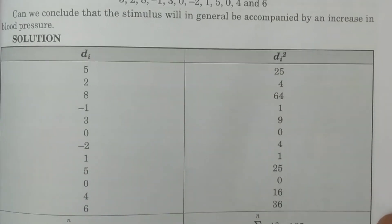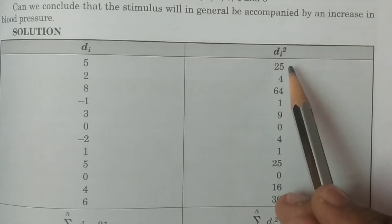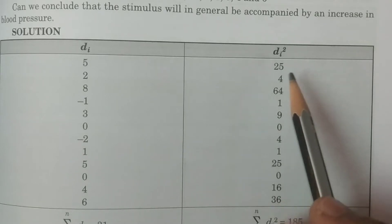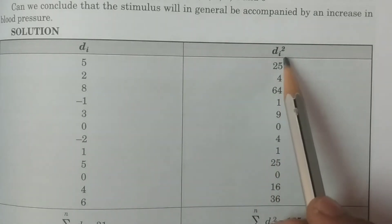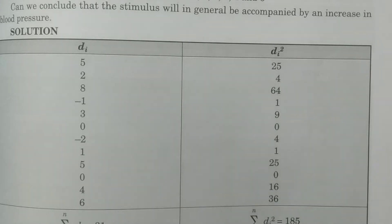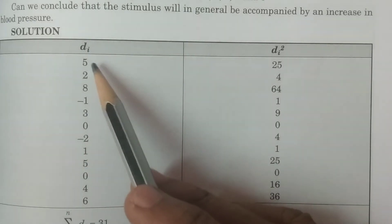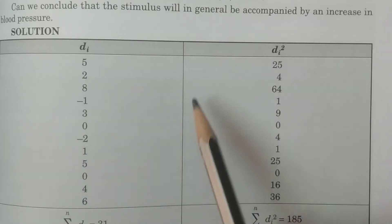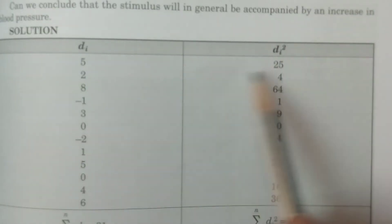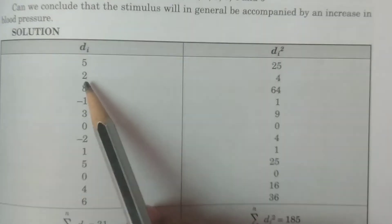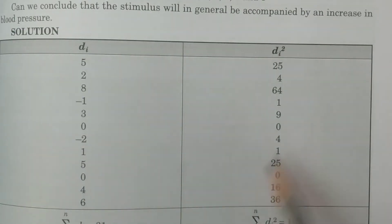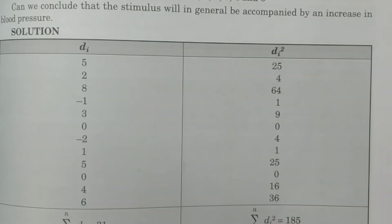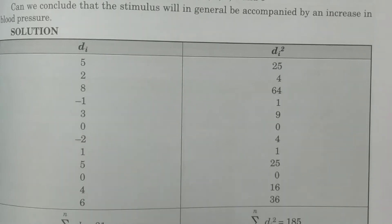For this calculation, first you compute Di and Di squared. You square the values and calculate summation Di and summation Di squared. Di values are 5, 2, 8, and so on. Di squared values are 5 squared equals 25, 2 squared equals 4, etc. Calculate all the squares, giving summation Di squared and summation Di — which are 31 and 185 respectively.